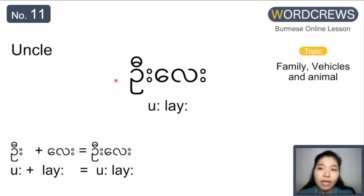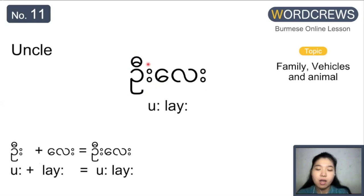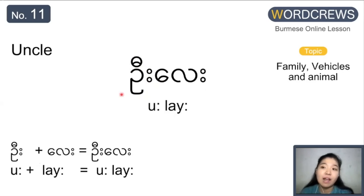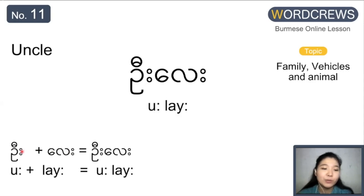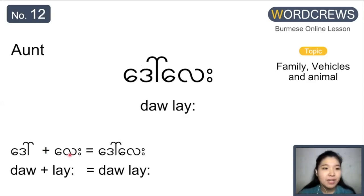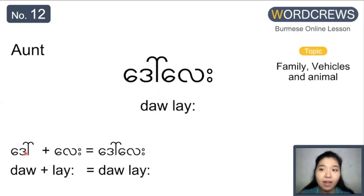Next one is uncle. Uncle is u le. This one is actually a special character — it's not included in the 33 basic alphabets, so you can just remember it as a special character pronounced u. And the next one is le, which we've seen a lot. So u le is uncle. Next is aunt, do le. The first word is do — a combination form of the da alphabet and the or consonant symbol. And le that we already know. So do le.